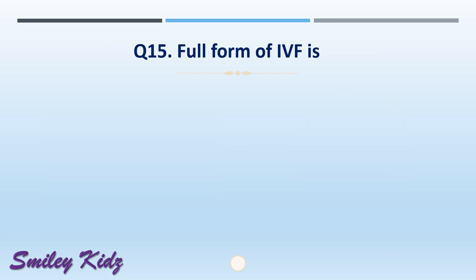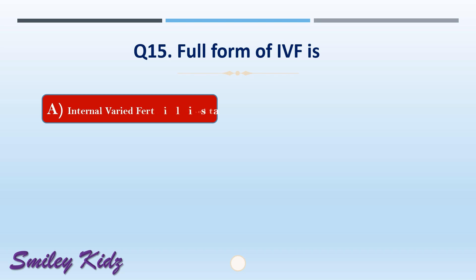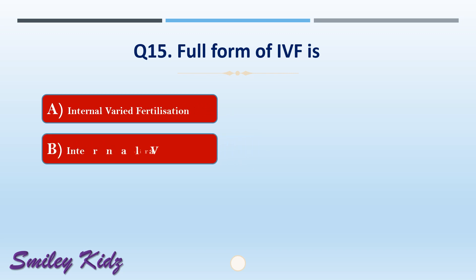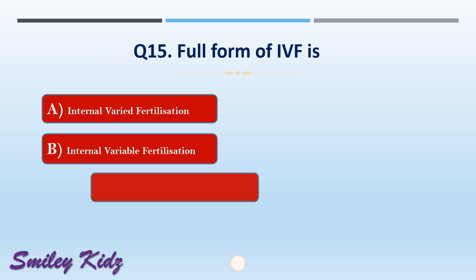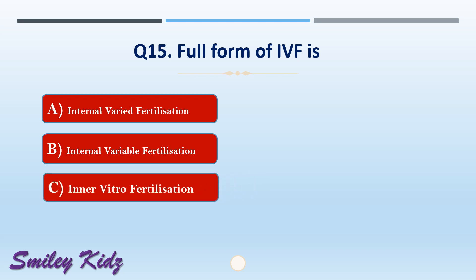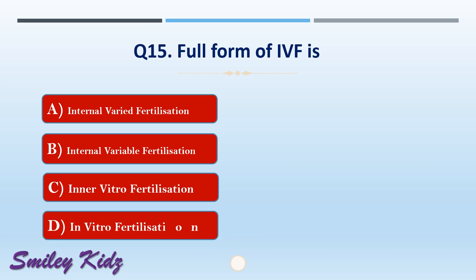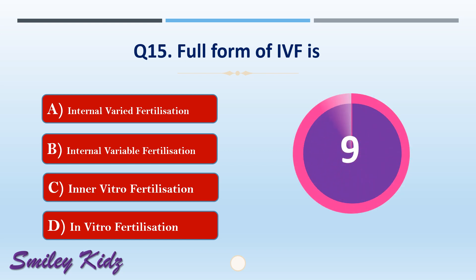Question number fifteen: the full form of IVF is dash. The options are: A) internal varied fertilization, B) internal variable fertilization, C) inner vitro fertilization, or D) in vitro fertilization. The right answer is option D, in vitro fertilization. The full form of IVF is in vitro fertilization.